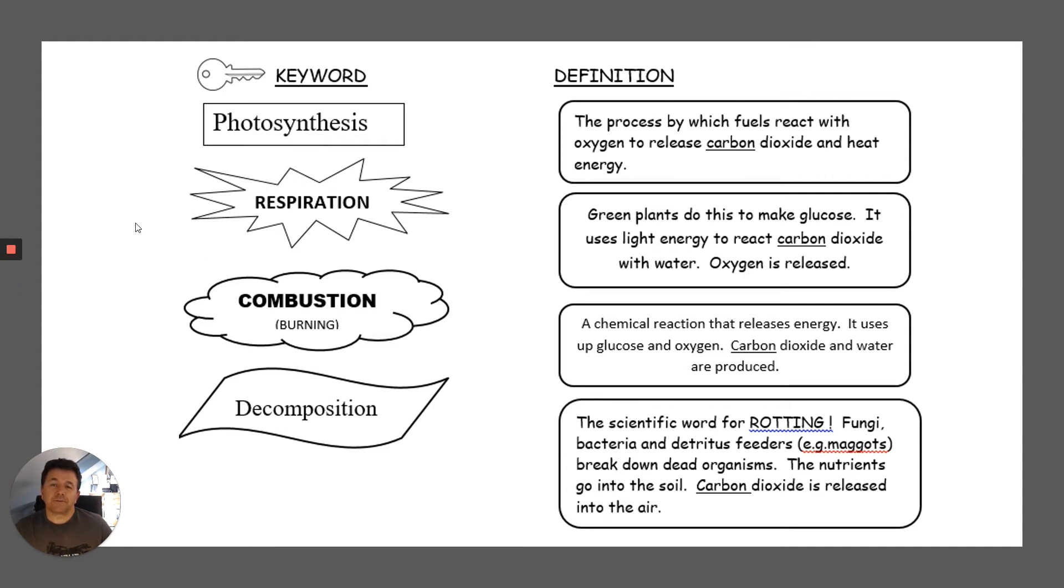First, photosynthesis - green plants do this to make glucose. It uses light energy to react carbon dioxide with water, and oxygen is released. Respiration - a chemical reaction that releases energy. It uses up glucose and oxygen, and carbon dioxide and water are produced.